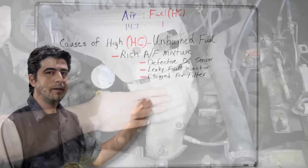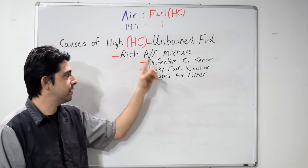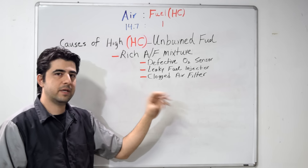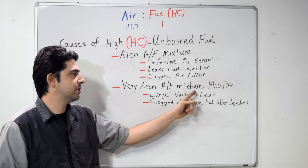Besides the O2 sensor, a leaky fuel injector or a carburetor that's not adjusted properly could pump too much fuel into your engine and cause a rich condition. On the air side, a clogged air filter can choke off the air going into your engine, throwing off the balance and causing a rich condition as well. Now interestingly, besides a rich air-fuel mixture, a very lean air-fuel mixture that causes misfires can also cause you to have high HC.